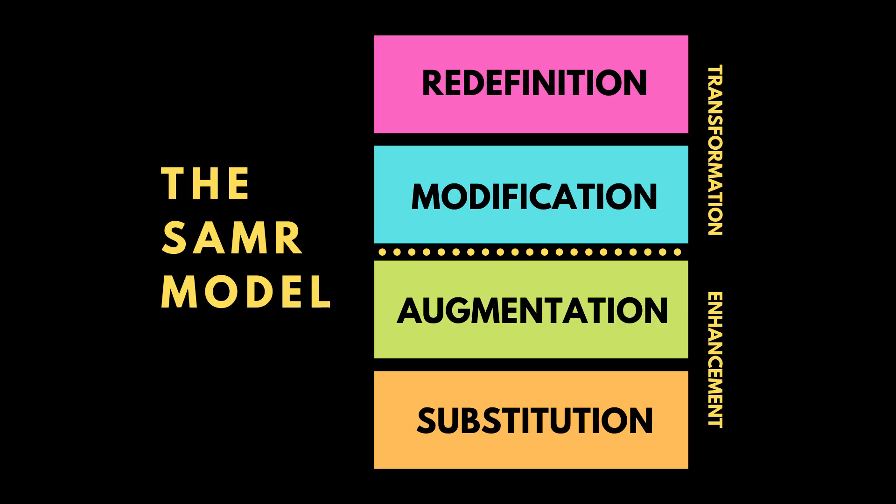Now, if we look at the model, we can draw a dotted line across the middle, separating the substitution and augmentation from the modification and redefinition. The substitution and augmentation levels are viewed more as enhancements, while the other two are more transformational in terms of how technology supports learning.